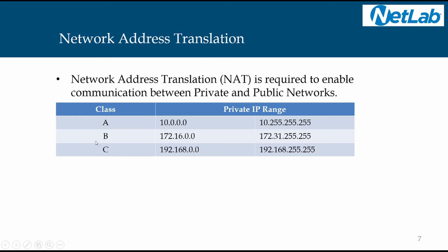Class B private range is 172.16.0.0 to 172.31.255.255. Any IP address within this range is a private IP address. In class C, 192.168.0.0 to 192.168.255.255 — any IP address within this range is also a private IP address.